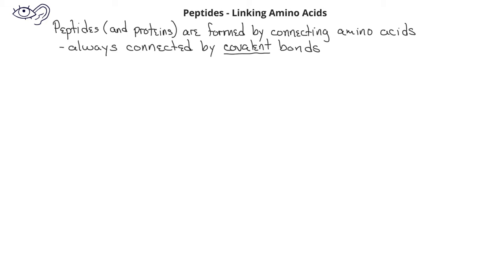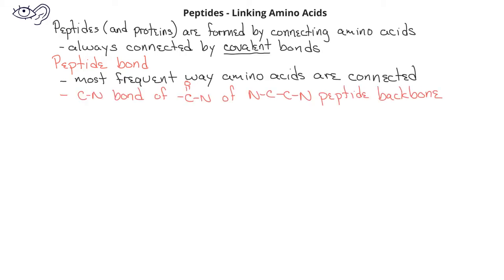The most frequent way that amino acids are connected is through a peptide bond. A peptide bond is the carbon-nitrogen bond in an amide functional group that's present in the peptide backbone.